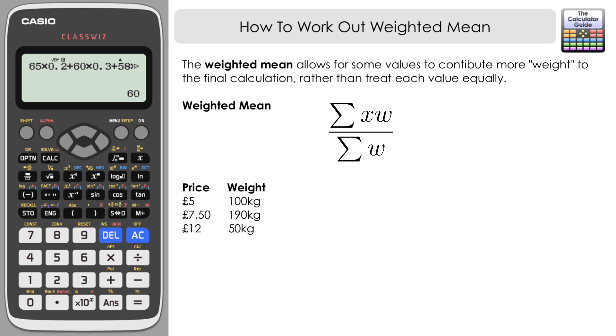Once again, if we just worked out the arithmetic mean of this, to find the average price, if we just added them together and divided by three, you'd get £8.17 to two decimal places. But that doesn't take into account that we've actually sold quite a bit less of the expensive £12 product. So it would be better to use the weighted mean to take into account the fact that we've sold the most of the £7.50 and certainly the least of the £12 product.